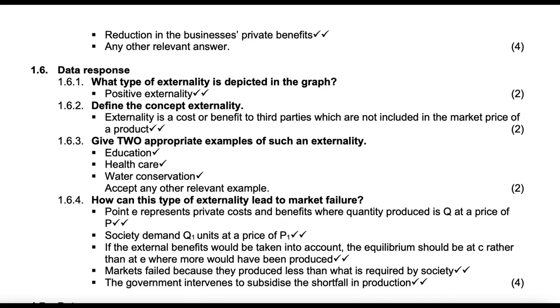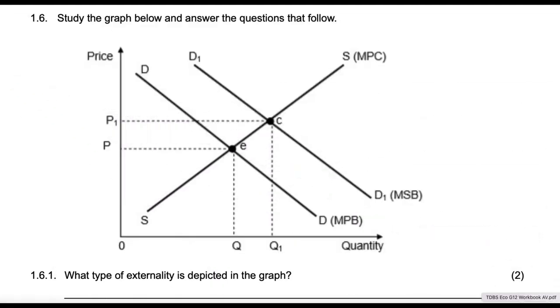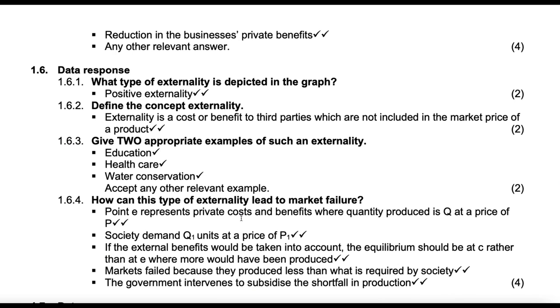Then how can this type of externality lead to market failure? Point E. Which one is point E? This one. Point E represents positive private costs and benefits where quantity produced is Q. So basically they are saying this is the cost and benefits to the individual. Then society demands Q1 units at a price of P1. If the external benefit would be taken into account, the equilibrium should be at C, which is that other point other than E. Rather than E, where more would then be produced. Then markets fail because they produce less than what is required by the society. Then the government intervenes to subsidize the shortfall in the production.